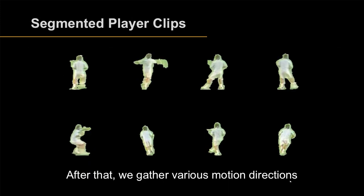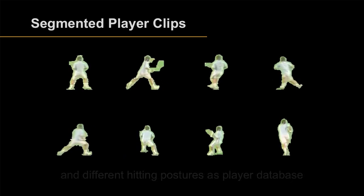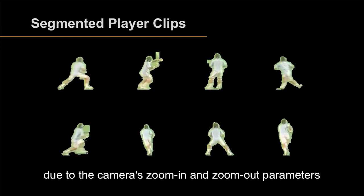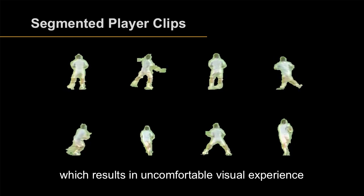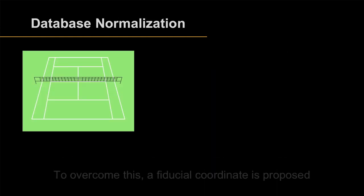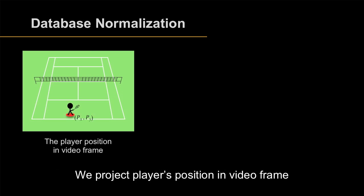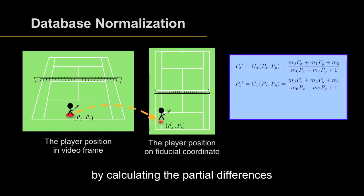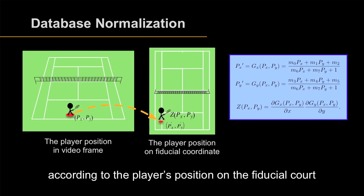After that, we gather various motion directions and different hitting postures into a player database. The size of each player differs due to the camera's zoom-in and zoom-out parameters and the player's position on the court, which results in an uncomfortable visual experience. To overcome this, the fiducial coordinate is proposed. We project the player's position in the video frame onto the fiducial coordinate and normalize player size by calculating the partial differences to get the magnification ratio according to the player's position on the fiducial court.